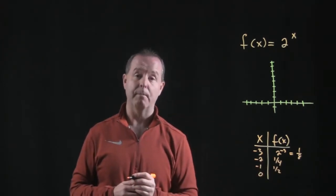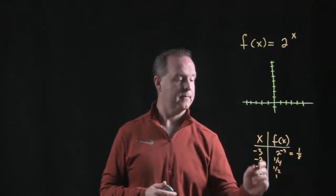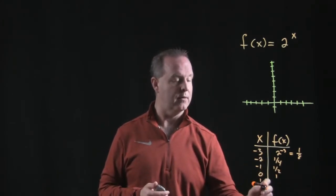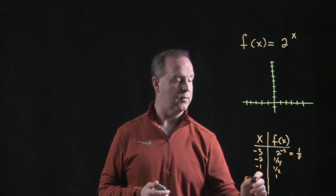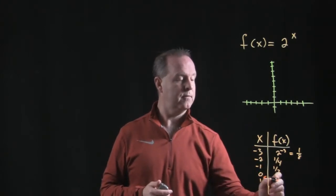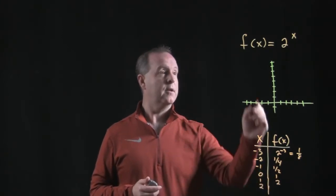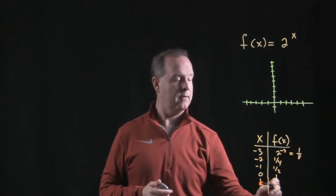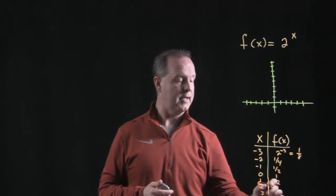Zero, anything to the 0 power is 1. And let's do likewise. Let's do 1, 2, and 3 as well. Run out of room here, folks, sorry. 1 makes it 2, 2 to the 2nd is 4, and 2 to the 3rd is 8.